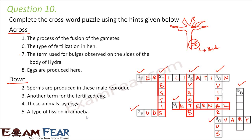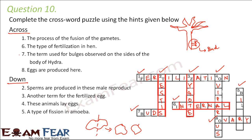Number five down: a type of fission in amoeba. There are two types of fission — binary fission and multiple fission. In amoeba, the parent organism breaks into two halves, so this is binary fission.